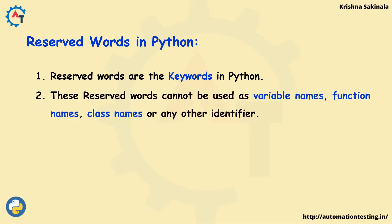These reserved words cannot be used as variable names, function names, class names, or any other identifier. We already discussed this point in our previous video on Python identifiers — reserved words cannot be used as an identifier.